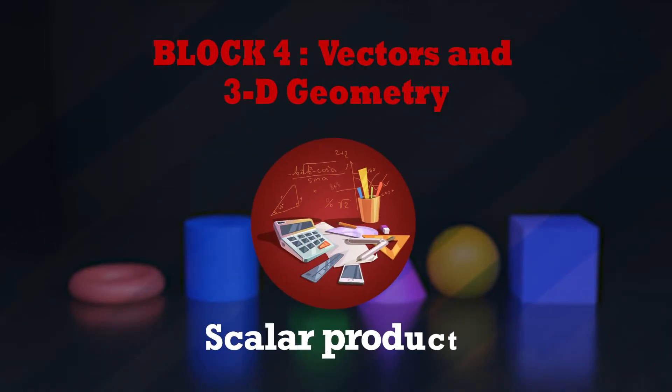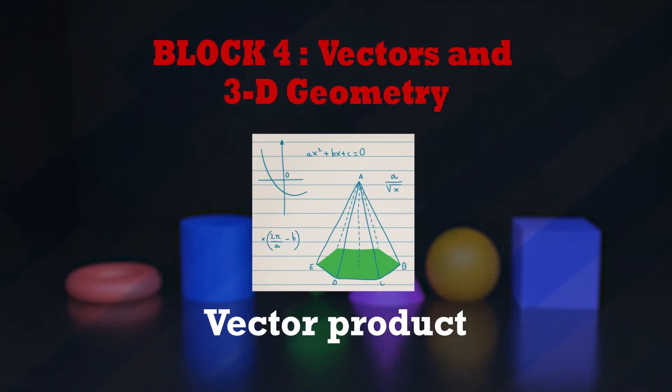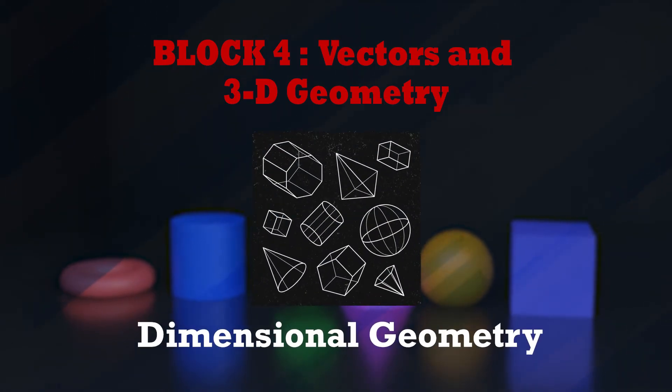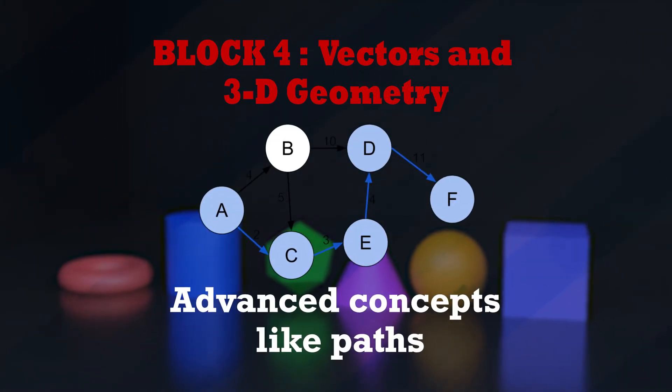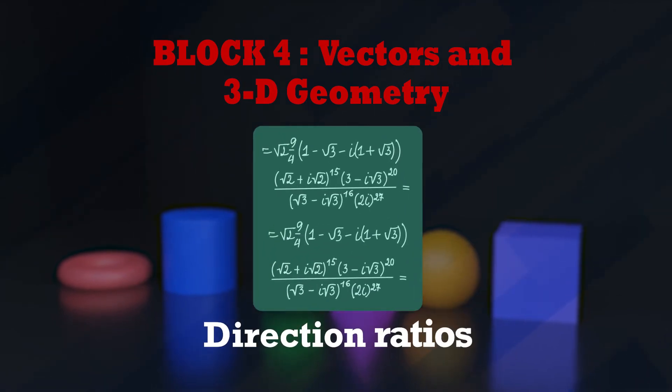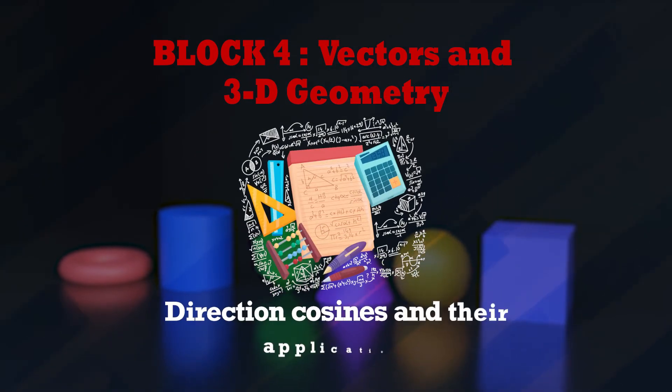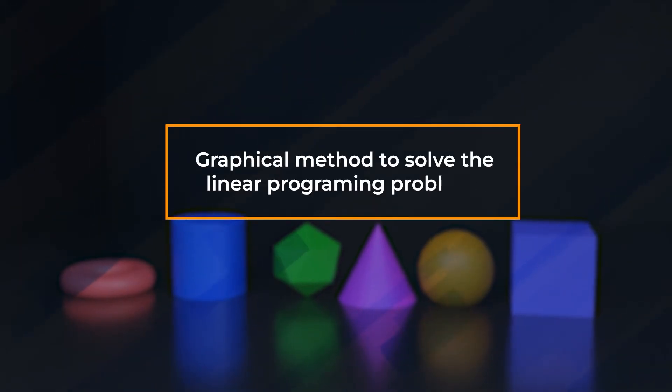Further, in Block four, we will be understanding vectors and three-dimension geometry. We will cover scalar product, vector product, and different operations performed at the vector level. In the three-dimension geometry section, we will understand advanced concepts like direction ratios, direction cosines, and their applications. Apart from this, we are going to cover linear programming, which is very important — specifically the graphical method to solve linear programming problems.